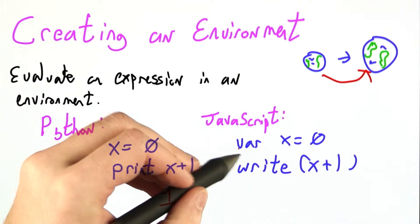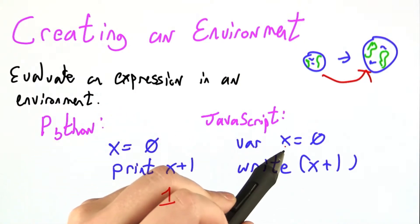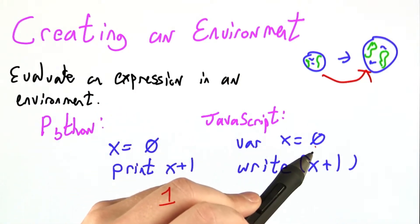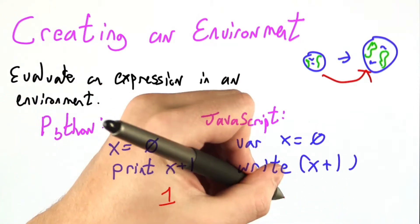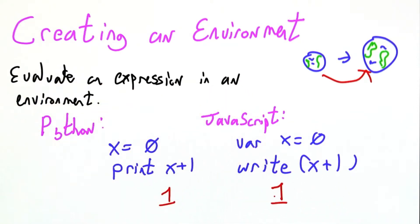And over here in JavaScript, we use a var statement to introduce the variable x and assign it the value 0. And then we write out onto the web page x plus 1, which, in an incredible surprise move, will also be 1.